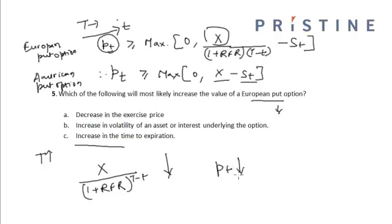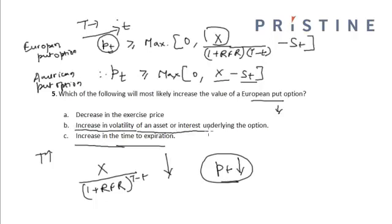So the increase in time to expiration does not give us a clear picture of whether the value of the European put option will increase, because a longer time to expiration increases the option value through increased volatility, but it also decreases the present value of the option payoff at expiration. We cannot say for sure whether the European put option value will decrease or increase with an increase in time to expiration. However, we can say that with an increase in the volatility of the underlying asset, the value of the European put option will increase. So the correct option is option B.